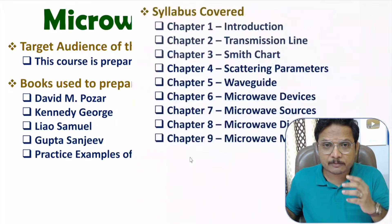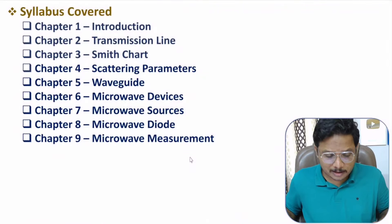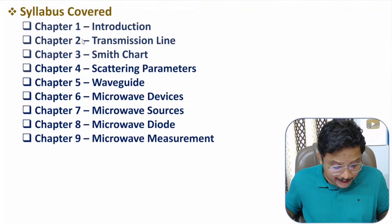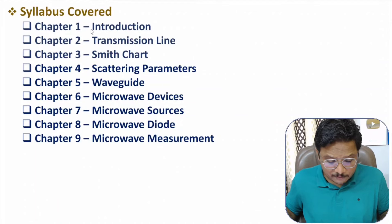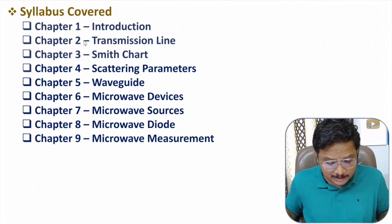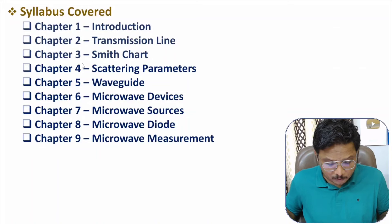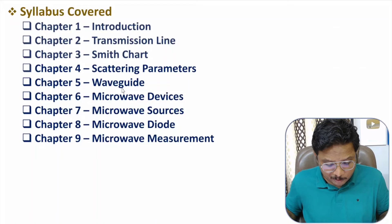If you observe the syllabus of this course, then in total nine chapters are there. The first chapter is an introduction to microwave engineering, the second chapter is transmission line, the third chapter is Smith chart, and the fourth chapter is scattering parameters.